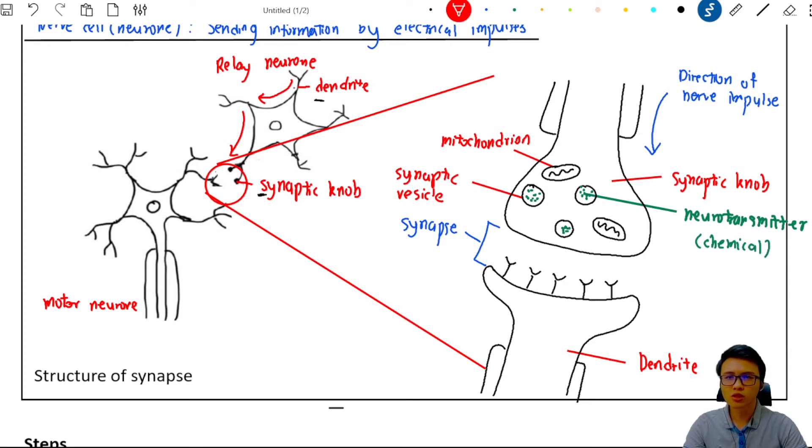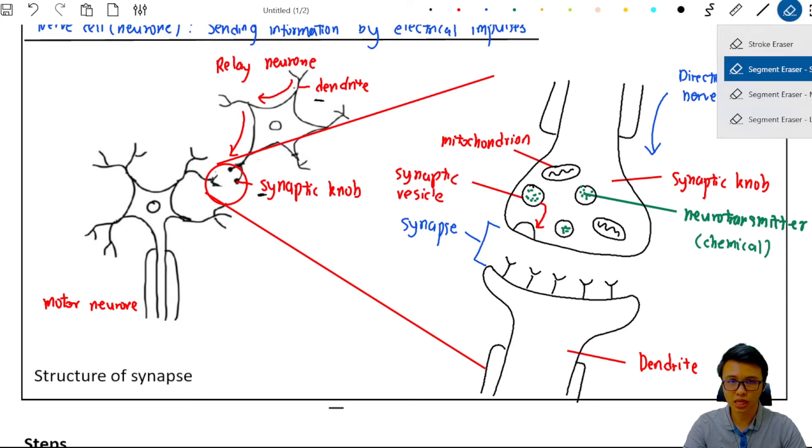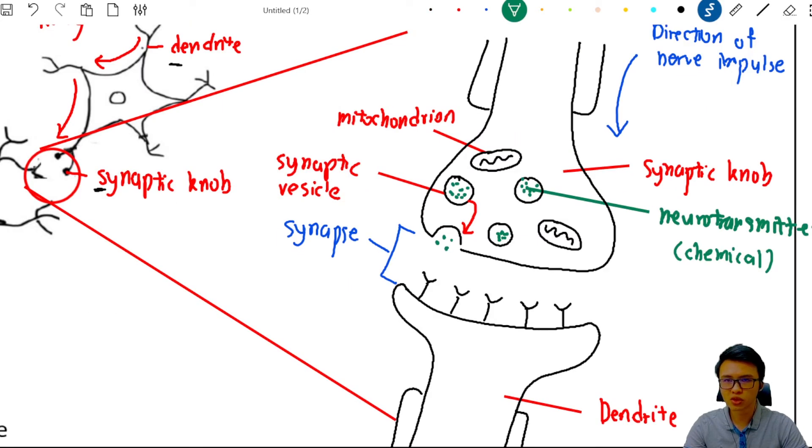Now, in order to release the neurotransmitter into the synapse, this synaptic vesicle is going to move towards the end of the synaptic knob to fuse with the membrane of the synaptic knob in order to release the neurotransmitter into the synapse.